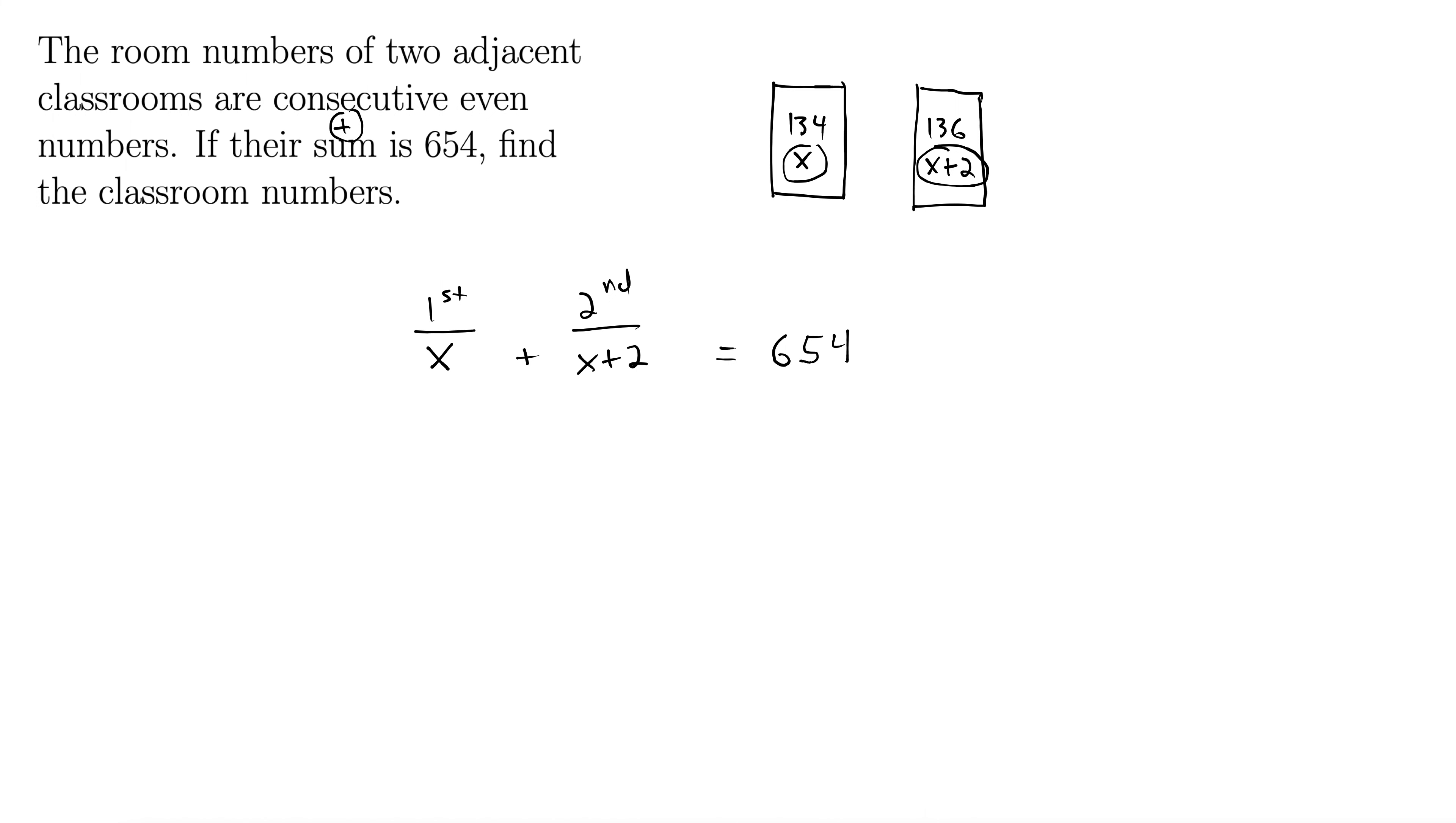Okay, well, now it's just some pretty straightforward algebra. We'll combine like terms, so that gives us 2x plus two is 654. Subtract the two, 2x is 652, and finally divide both sides by 2 to get x equals 326.